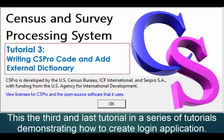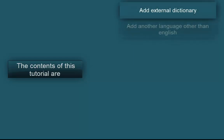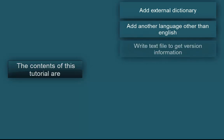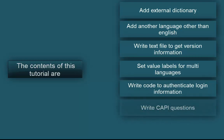This is the third and last tutorial in a series demonstrating how to create a login application. The contents of this tutorial are: add external dictionary, add another language other than English, write a text file to get version information, set value labels for multi-languages, write code to authenticate login information, write CAPI questions, and at the end we will test the application.